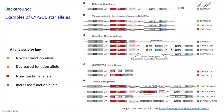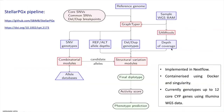Looking at some of these challenges, it motivated us to develop a reproducible pipeline, StellarPGX, for calling star alleles in certain cytochrome P450 genes such as CYP2D6. What is unique about StellarPGX is that it employs graph-based variant detection in the beginning, and then also uses combinatorial star allele detection downstream.